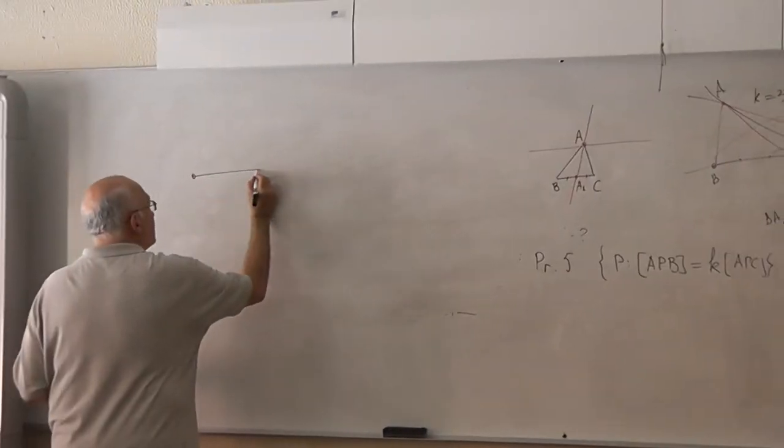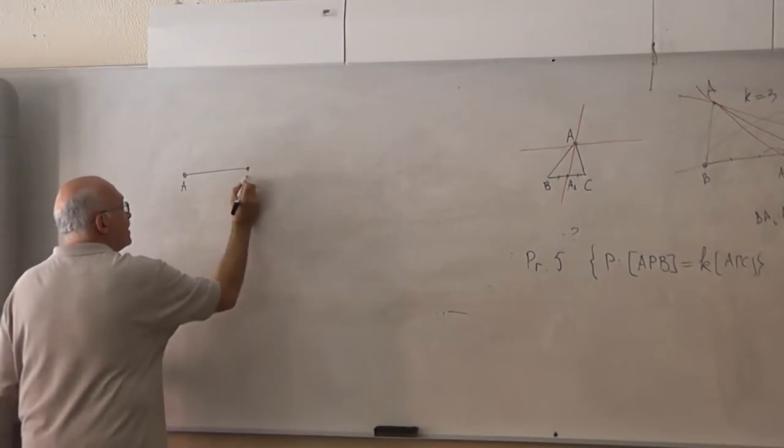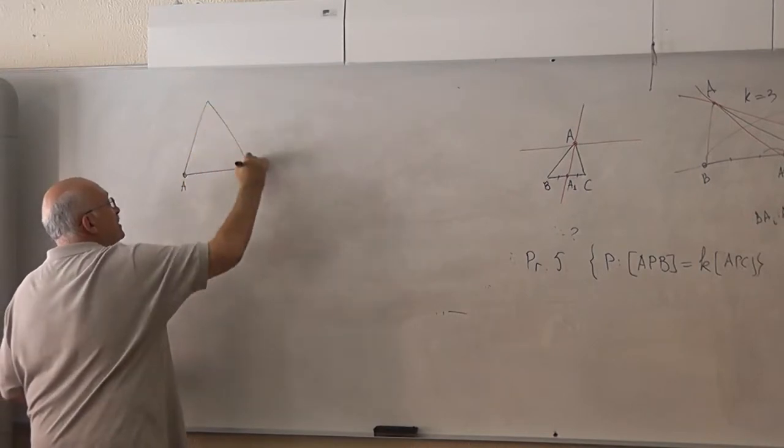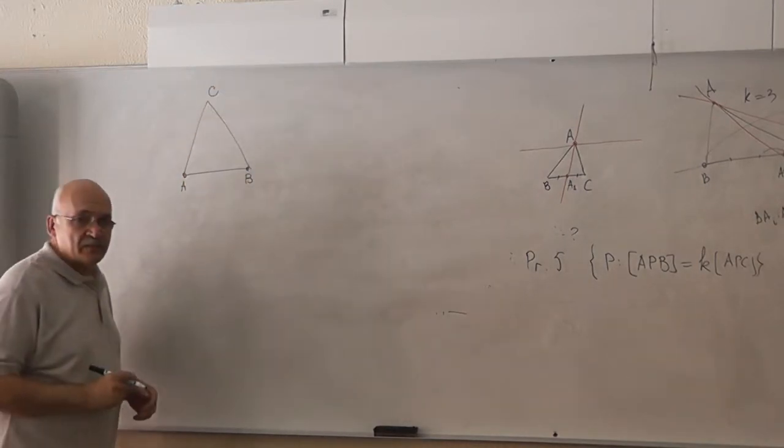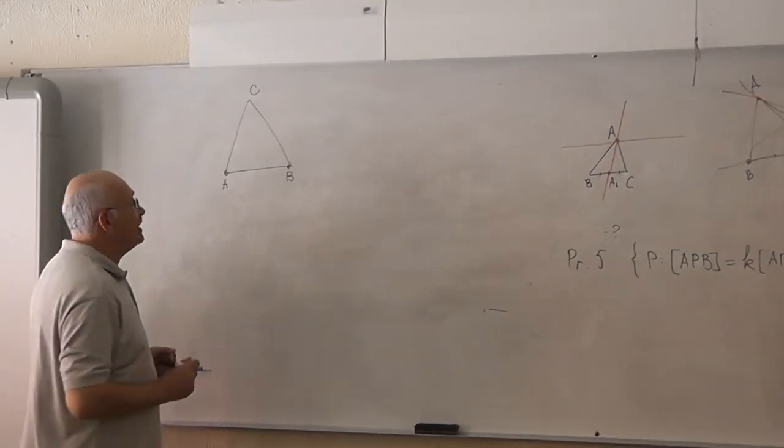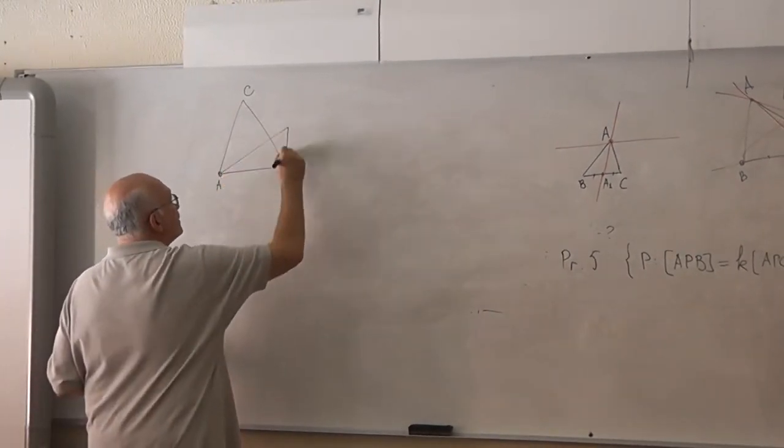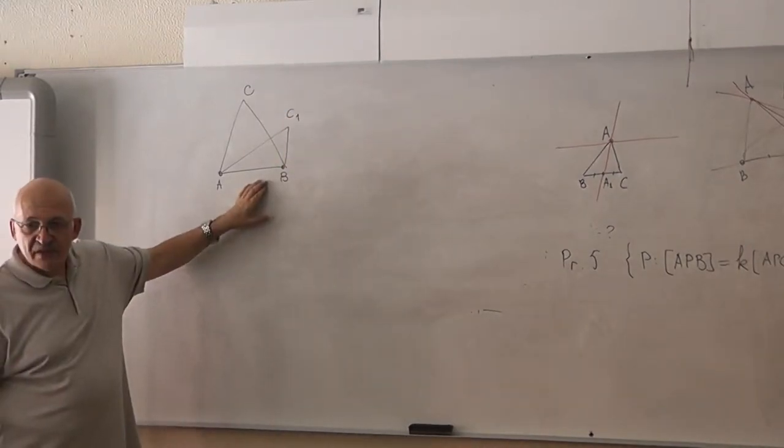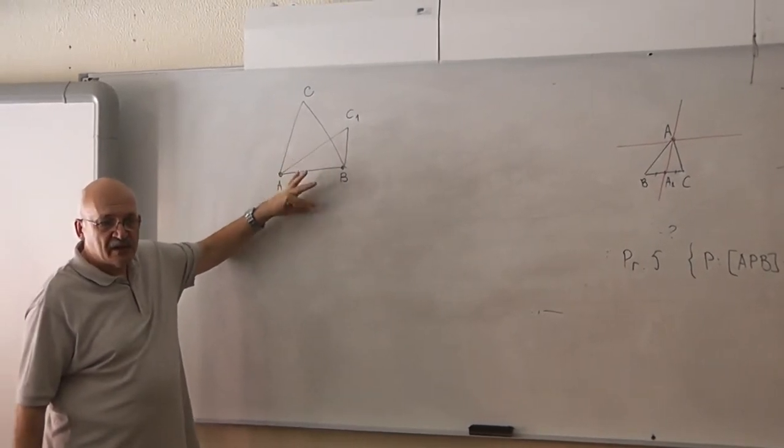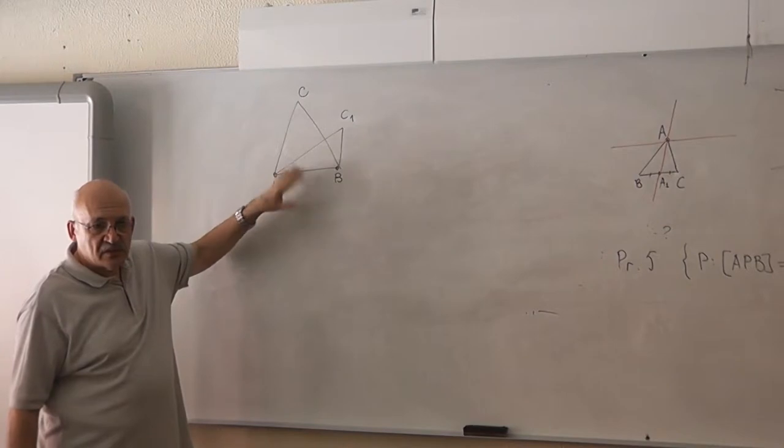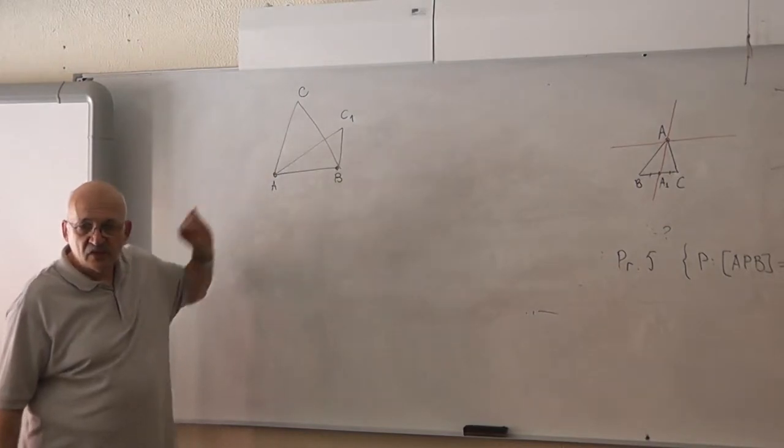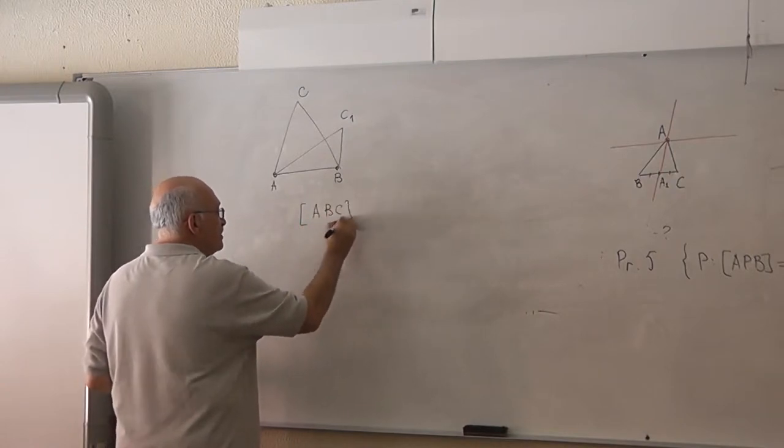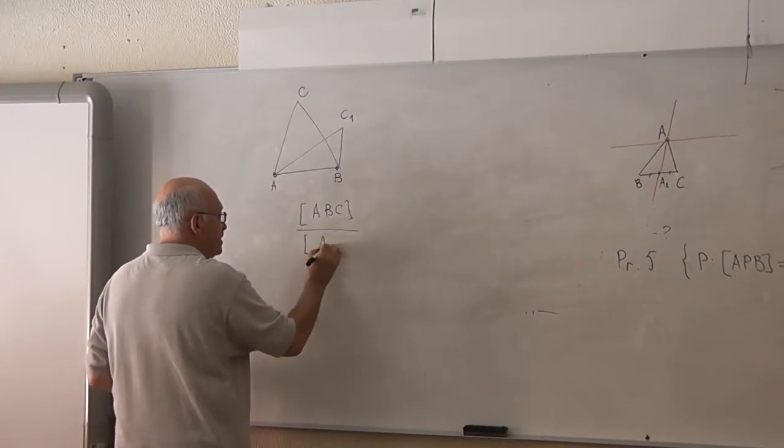In our case, we will have two triangles with a common base. The common base will be AB. Forget those steps. One triangle is ABC. Another triangle is ABC1. Two triangles with a common base. The notations are different, labels are different. And I want the ratio of their areas ABC to ABC1.